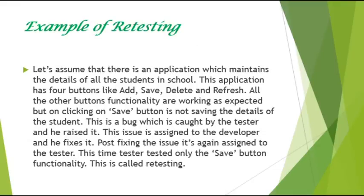Now let's look into an example of retesting. Take the same example as before — an application that maintains student details, which has Add, Save, Delete, and Refresh. For example, if you have some problem with the Save button — that is, the Save functionality is not working fine — the tester will raise a defect. In the new build, the developer will fix that issue, and the tester has to verify whether that Save button functionality is working fine or not. Unlike regression testing, we are not testing all other functionality — only the Save button functionality. That's the difference.